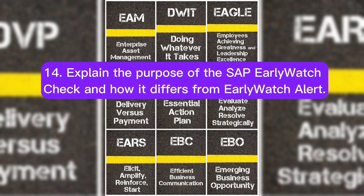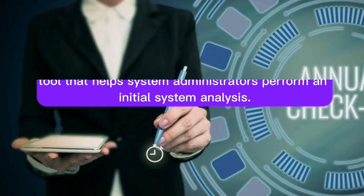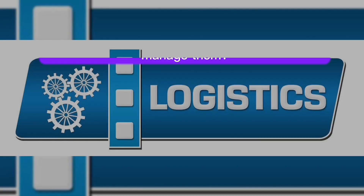Question 14: Explain the purpose of the SAP EarlyWatch Check, and how it differs from EarlyWatch Alert. The EarlyWatch Check is a self-service tool that helps system administrators perform an initial system analysis. It differs from EarlyWatch Alert, which is a comprehensive service provided by SAP that includes analysis by SAP experts.